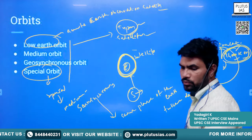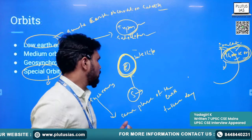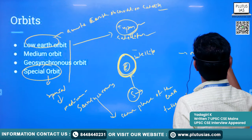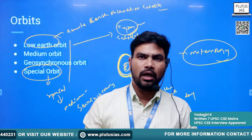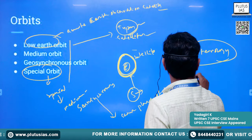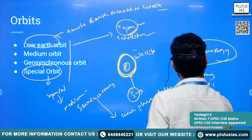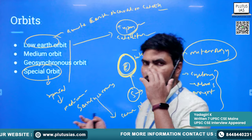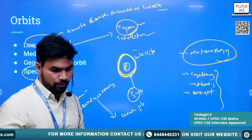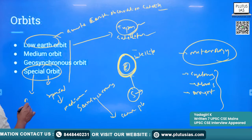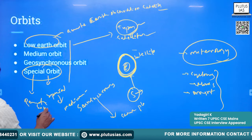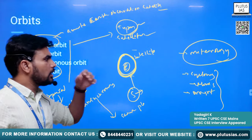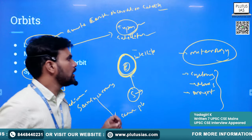These types of satellites are very useful in meteorology — weather-related aspects. If we want to find out weather conditions, especially in India — situations like cyclones, floods, or droughts — this kind of orbit is very useful for forecasting these events and alerting people early. Some special orbits are also useful in remote sensing.